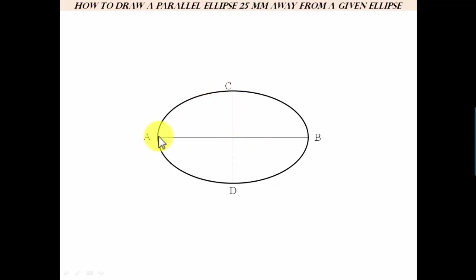What we need to do is mark 25 millimeters to the left of point A, in the downward direction from D, towards the right of B, and upwards from C. All of them are 25.